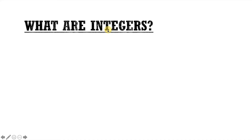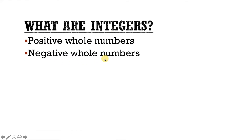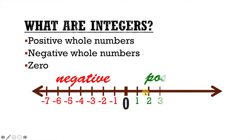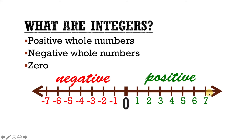So first of all, what are integers? Integers are positive whole numbers, negative whole numbers, and zero. Here is a number line, and on the number line we have the number zero, which has a really important job — it separates the negative numbers from the positive numbers. The negative numbers are located to the left of zero, and the positive numbers are located to the right of zero. So again, integers are positive whole numbers, negative whole numbers, and zero.